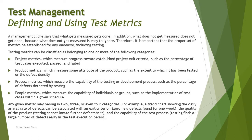A management principle says that what gets measured gets done, and what does not get measured does not get done. What does not get measured is easy to ignore because you don't have any statistics or measurements about it. If you don't have any inputs based on that, you cannot plan for activities or know what to do. Therefore, it is important that the proper set of metrics must be established for any endeavor, including testing.